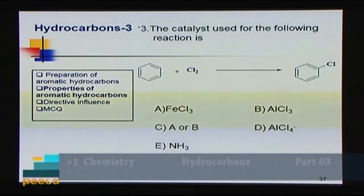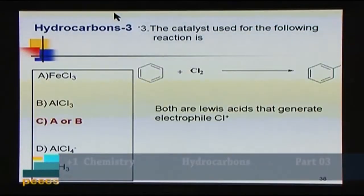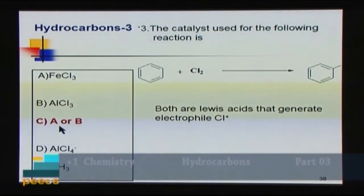Question 3: The catalyst used for the reaction benzene + Cl₂ → chlorobenzene is: A) FeCl₃, B) AlCl₃, C) A or B, D) AlCl₄⁻. The catalyst must be a Lewis acid — it accepts Cl⁻ and generates the electrophile Cl⁺. Both FeCl₃ and AlCl₃ serve as catalysts for halogenation. The answer is C (A or B).